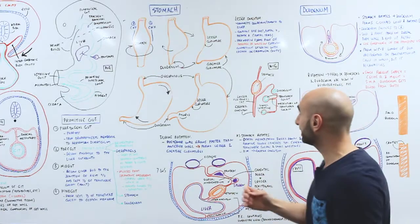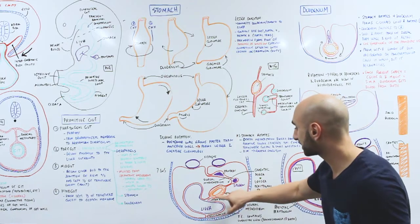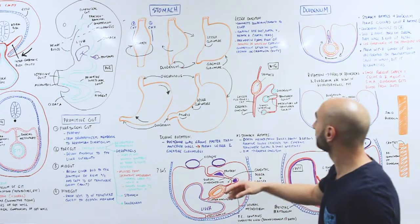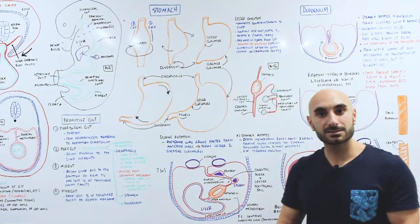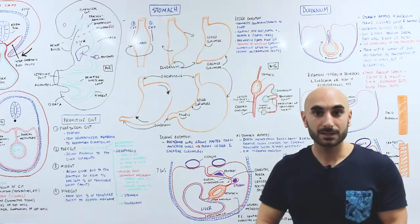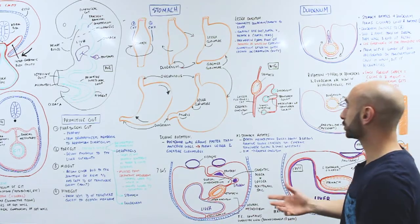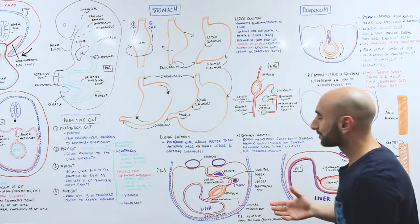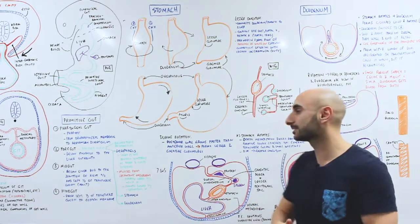The lesser omentum connects the stomach and duodenum to the liver. The lesser omentum — high-yield point — actually contains the portal triad, which consists of the hepatic artery, the bile duct, and the portal vein. For extra points, the free margin of the lesser omentum will form the roof of the foramen of Winslow, which is the opening connecting the lesser sac to the greater sac — the rest of the peritoneal cavity.